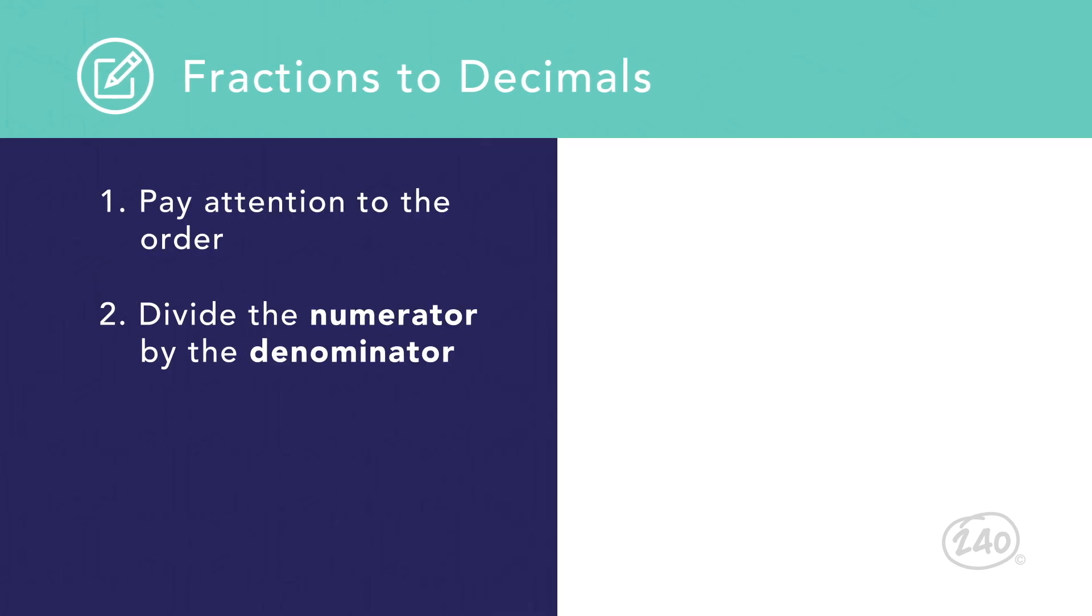When turning a fraction into a decimal, pay attention to the order. You'll divide the numerator by the denominator. For example, 2 thirds becomes 2 divided by 3, which equals the repeating decimal 0.66.